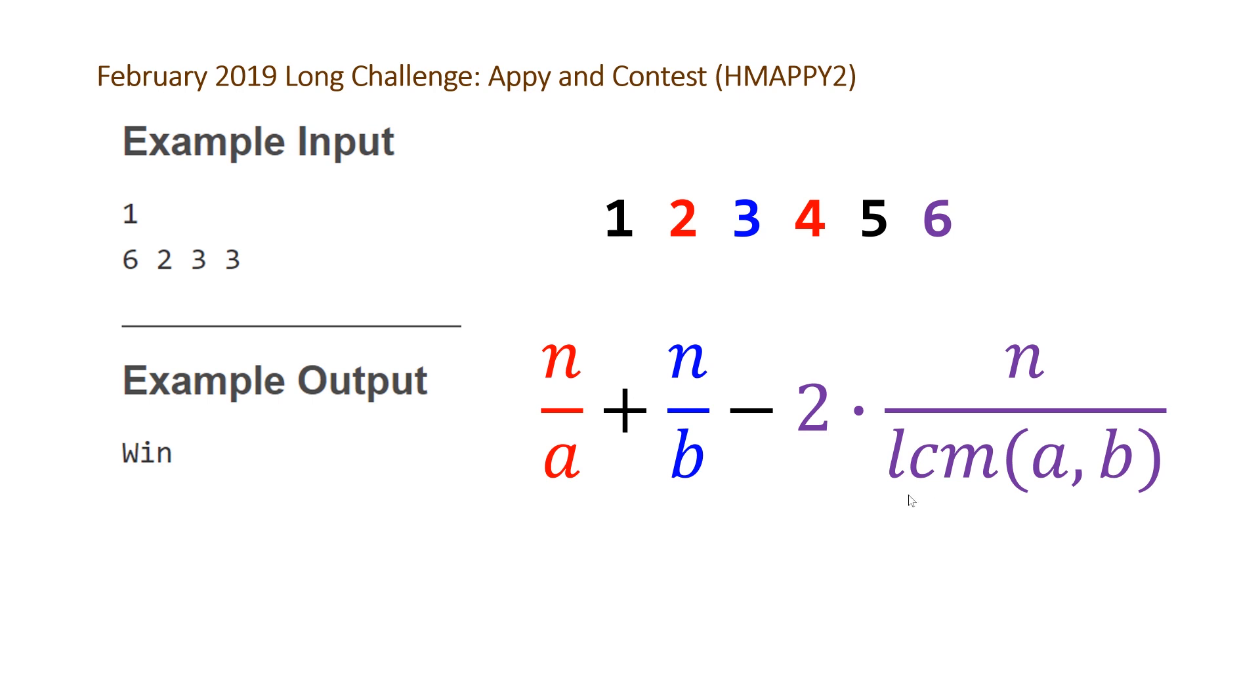And then all we have to do is calculate the LCM. So in C++17, we actually have this in our math library. Unfortunately, Codechef only has up to C++14, but luckily they have a built-in GCD function. And if you look up how to calculate the lowest common multiple, it can be calculated as follows: just A times B divided by the GCD of A and B. So knowing this, it's a pretty straightforward problem to solve.